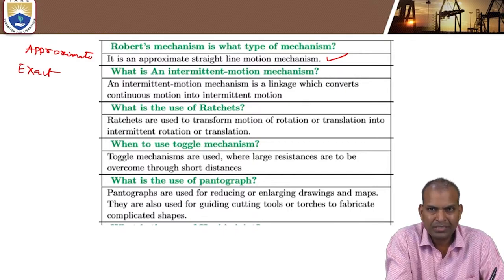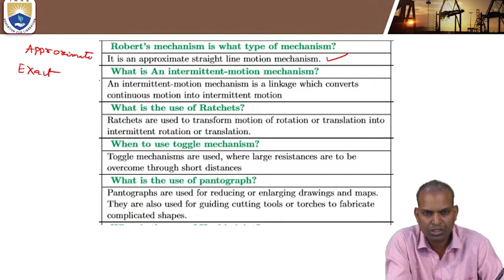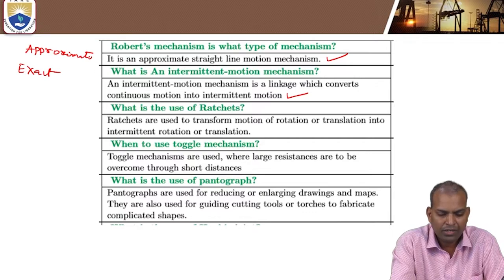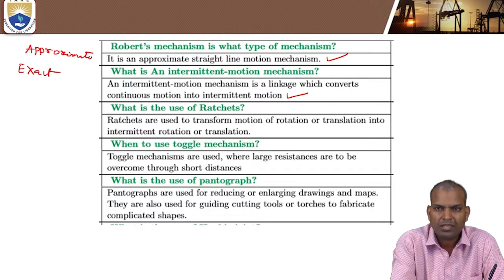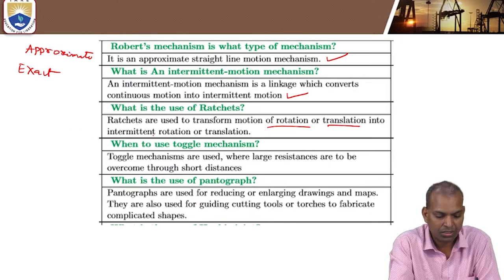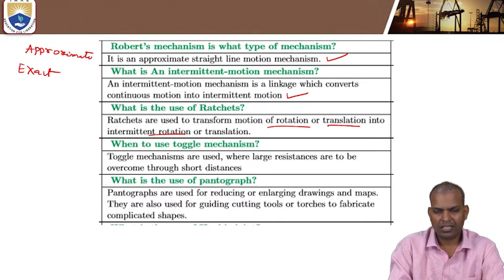What is an intermittent motion mechanism? It is a mechanism that converts rotary motion or continuous motion into intermittent motion. In some mechanisms, ratchets are used along with sliders and various links. These ratchets are used to transform motion of rotation or translation into intermittent motion — either intermittent rotation or intermittent translation.